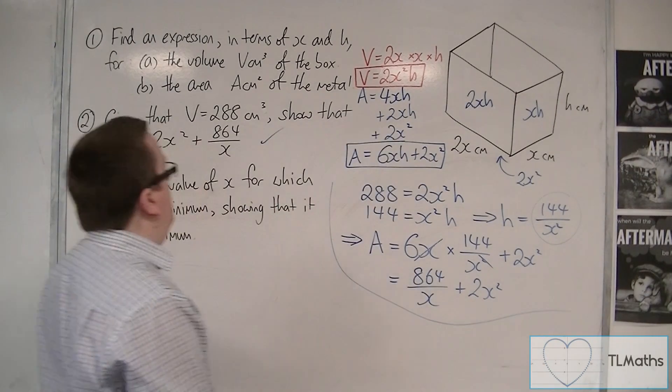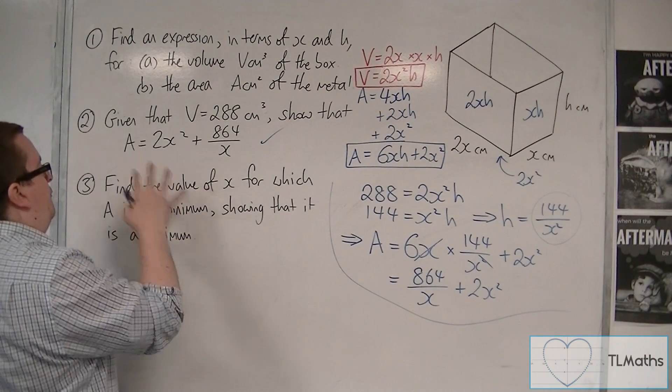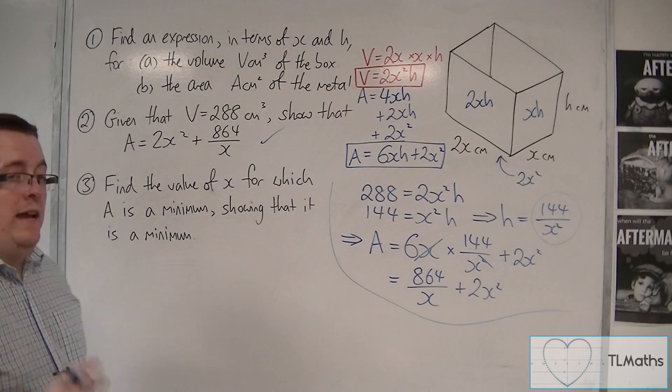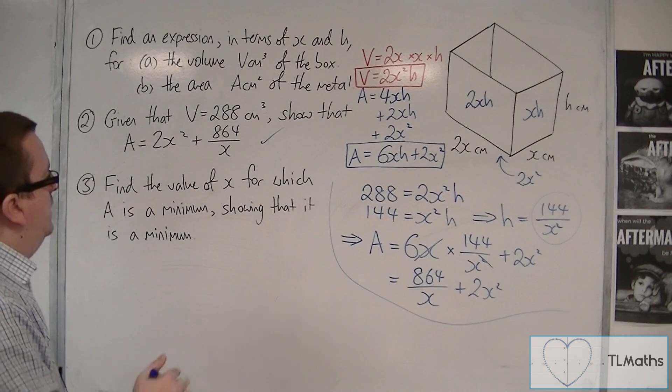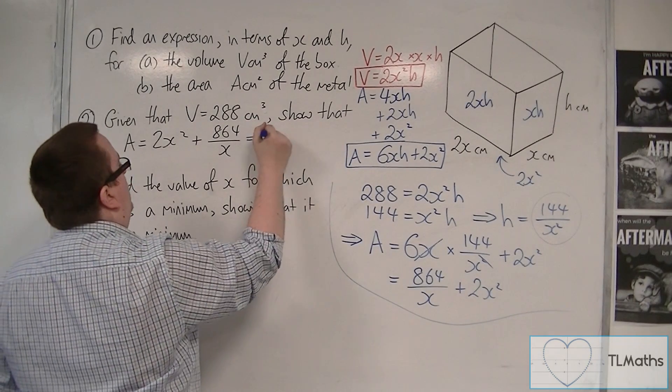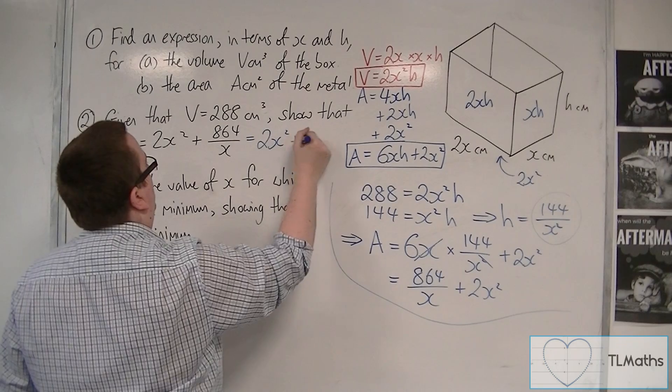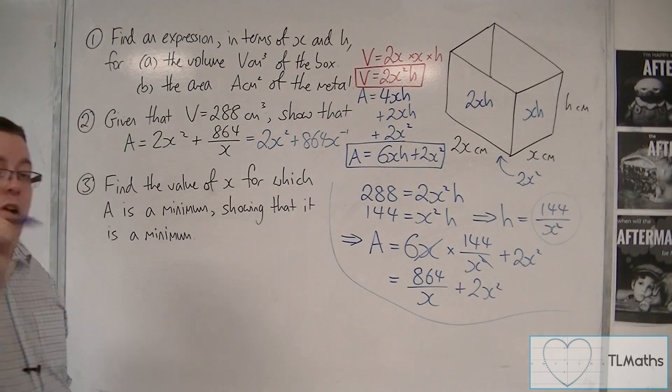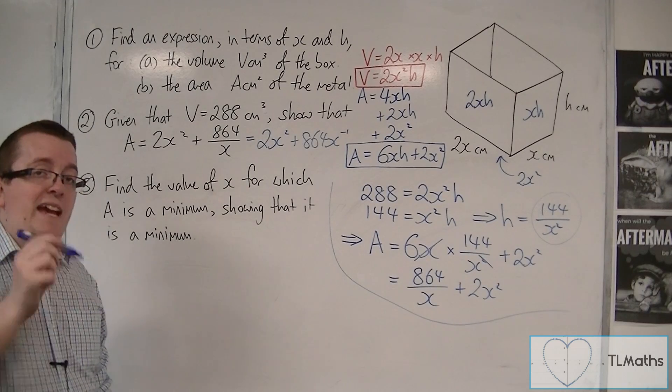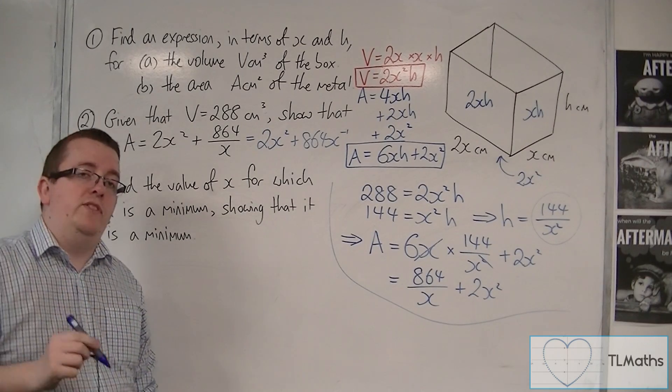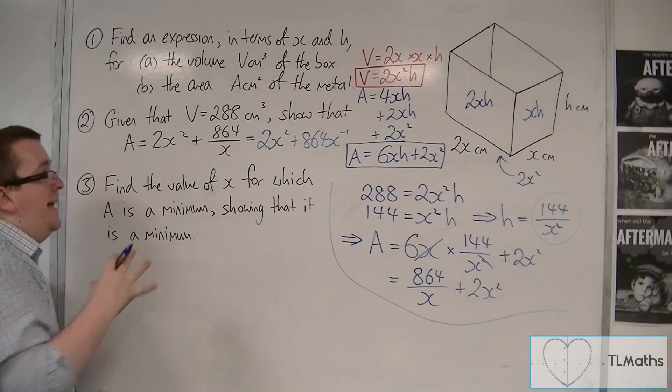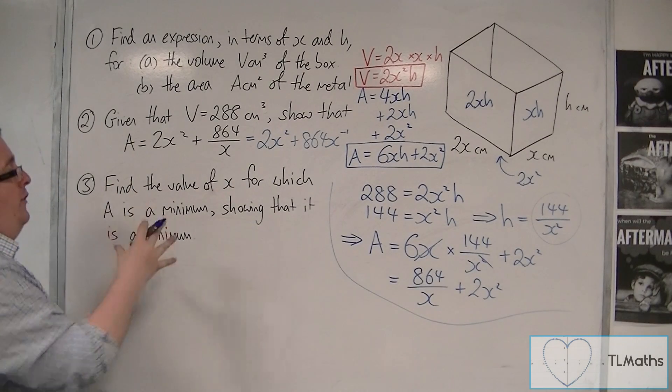So, from there, find the value of x for which A is a minimum, showing that it is a minimum. So, I'm going to rewrite this as 2x squared plus 864x to the minus 1. Because I need to find dA by dx, the derivative, because I want to minimize the area.